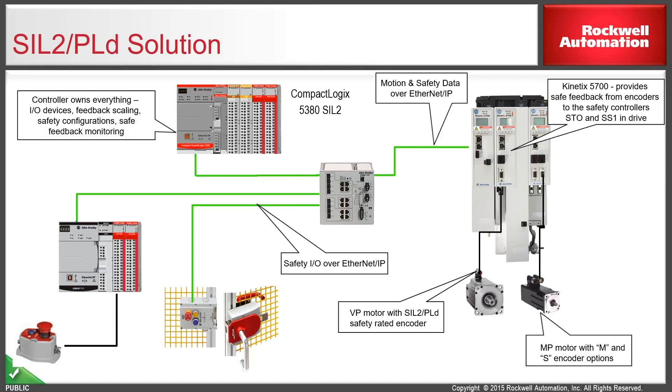So earlier we talked about a risk assessment and the outcome of a risk assessment being a performance level that you would need to design your safety function to meet or achieve. To do that would require certain hardware. So this slide shows a typical example of what a PLD solution might look like. It uses in this case a compact GuardLogix SIL 2 controller. It uses the Kinetics 5700 ERS4 drive and then to achieve the safety functionality we need to add in some type of safety feedback. If you look at the VPL or VPC motor, that would require a SIL 2 PLD encoder which is an option when you order the motor. Or if you're going to be using one of our more traditional MPL or MPM motors, basically all you would need in that case is to use the standard Stegmann Hiperface feedback.